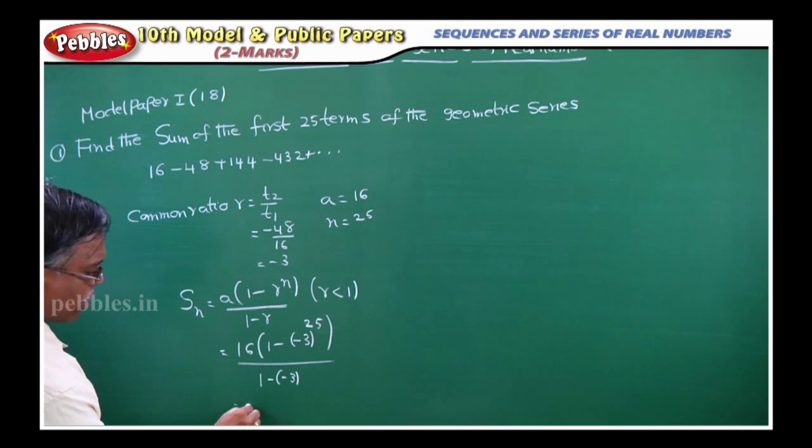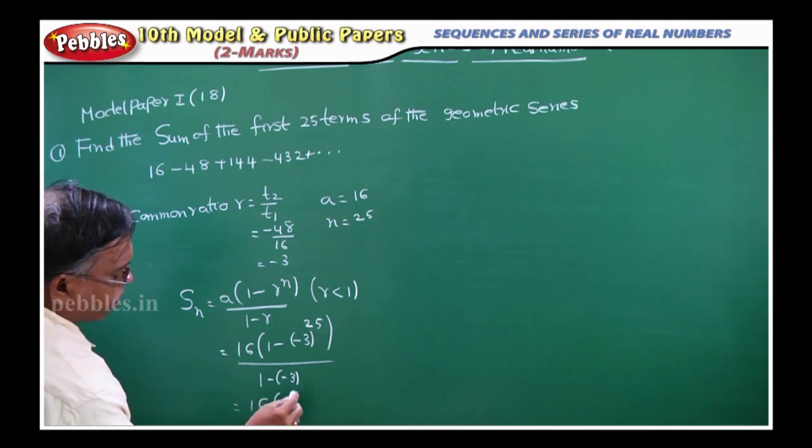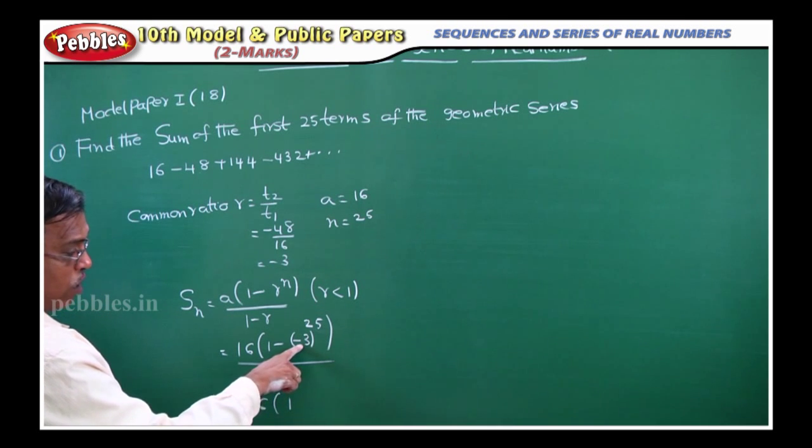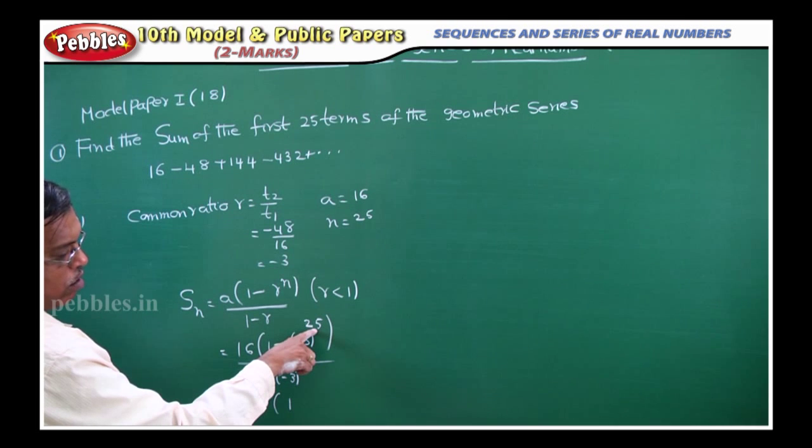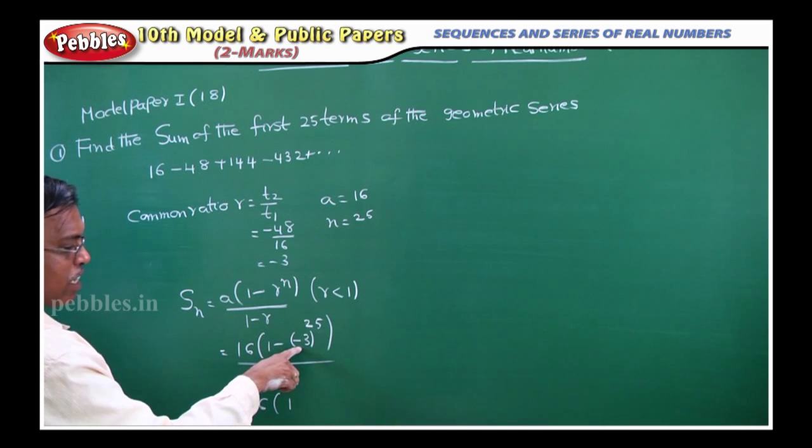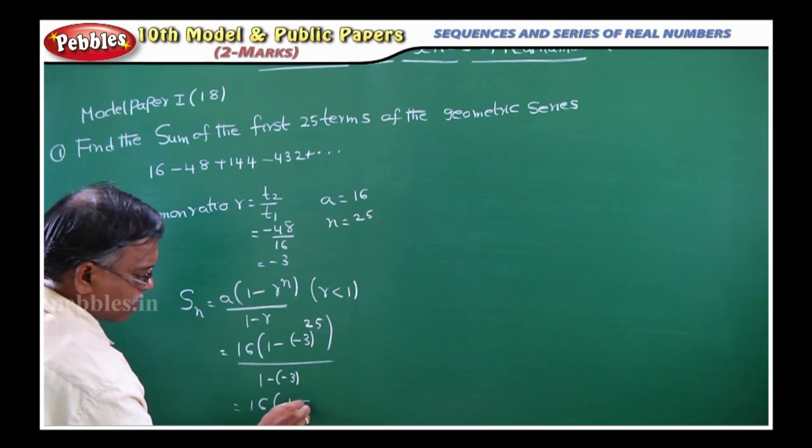Now 16 into 1, see here minus 3 whole power 25. Since the power is odd, I can write it as minus 3 whole power 25. So minus into minus, I will get it as plus.